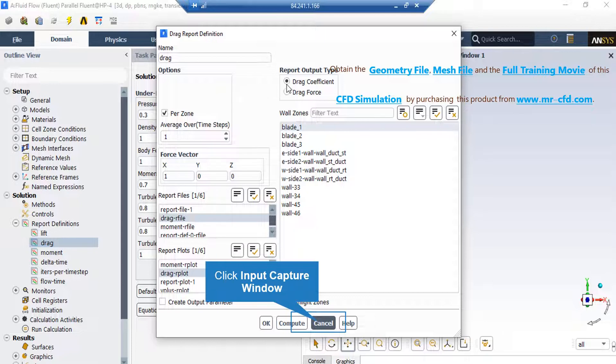The second report is the drag report. By double clicking on it, in the appeared window you can see drag coefficient report output type is defined over the blade number 1 wall zone.